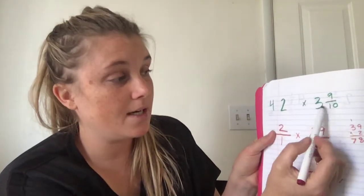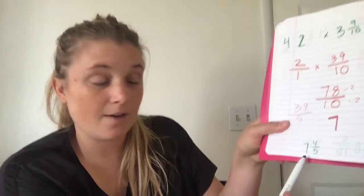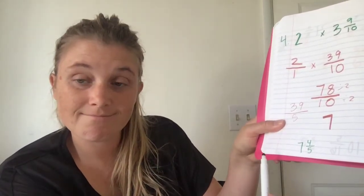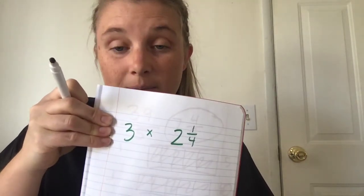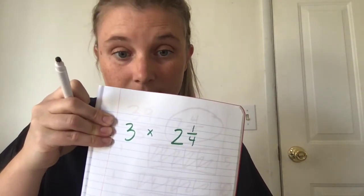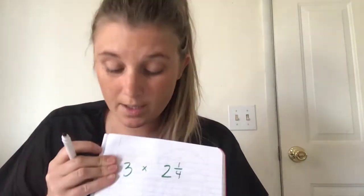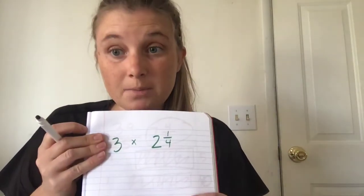So, two times three and nine-tenths equals seven and four-fifths. Okay, let's do another one. Can you try this one by yourself? Try this one all by yourself. Three times by two and a fourth. Try that by yourself. Now, remember, what do you do to the three? You put a one under it. Okay, pause me and try it.